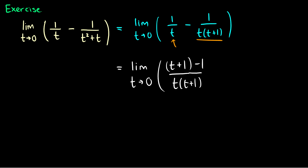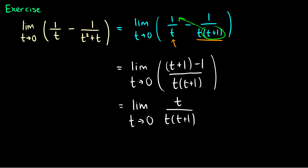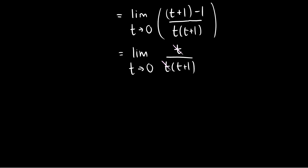We just multiply by whatever is not common: we have t already, so we take the t plus 1 and multiply it by the 1. On the right side we already have t and t plus 1, so we keep the 1 there. Now simplifying: the limit as t goes to 0 of — t plus 1 minus 1 is just t — all over t times t plus 1. I can cancel these t's out, leaving the limit as t goes to 0 of 1 over t plus 1.